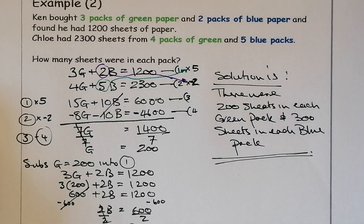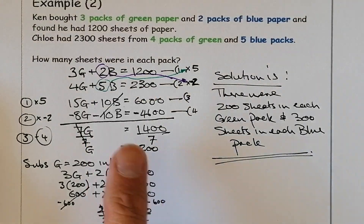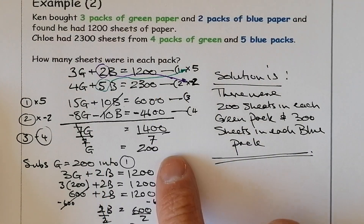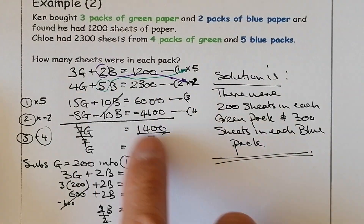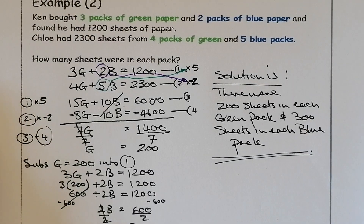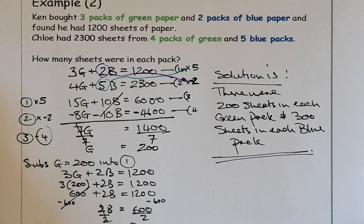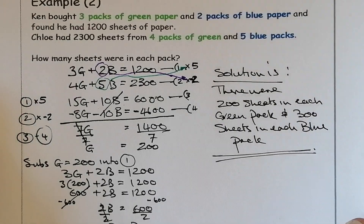I can do a quick double-check mentally to make sure that works out correctly — and yes, that comes to 2,300. So I know I've got that right before leaving the example. Last question.